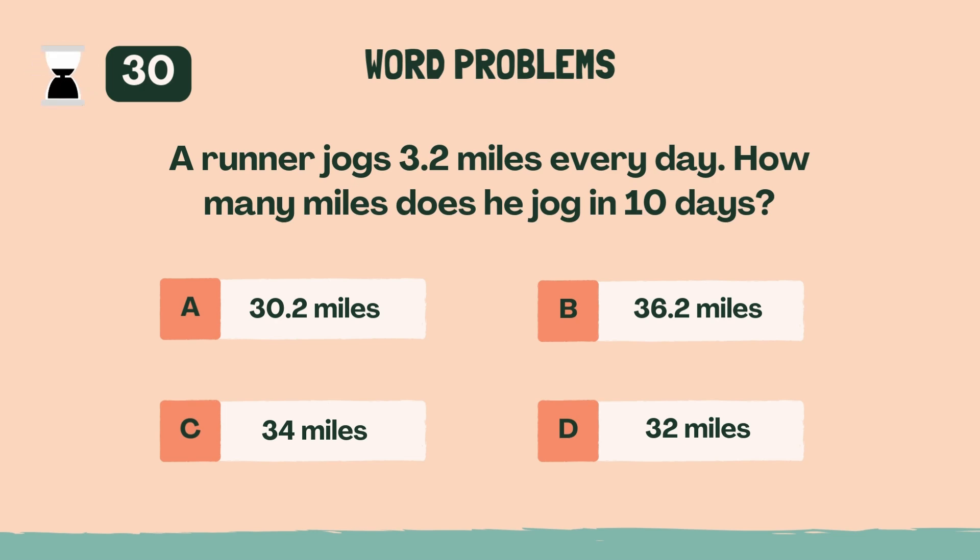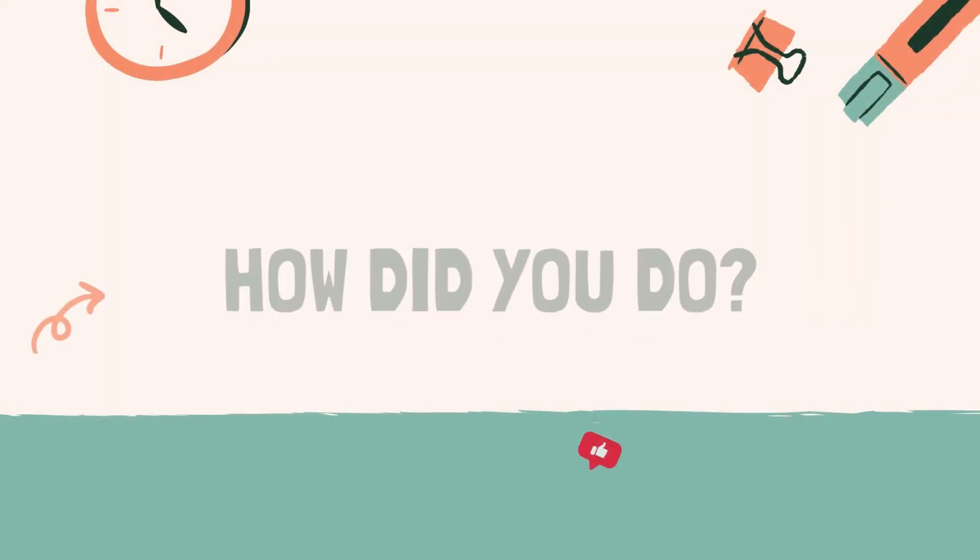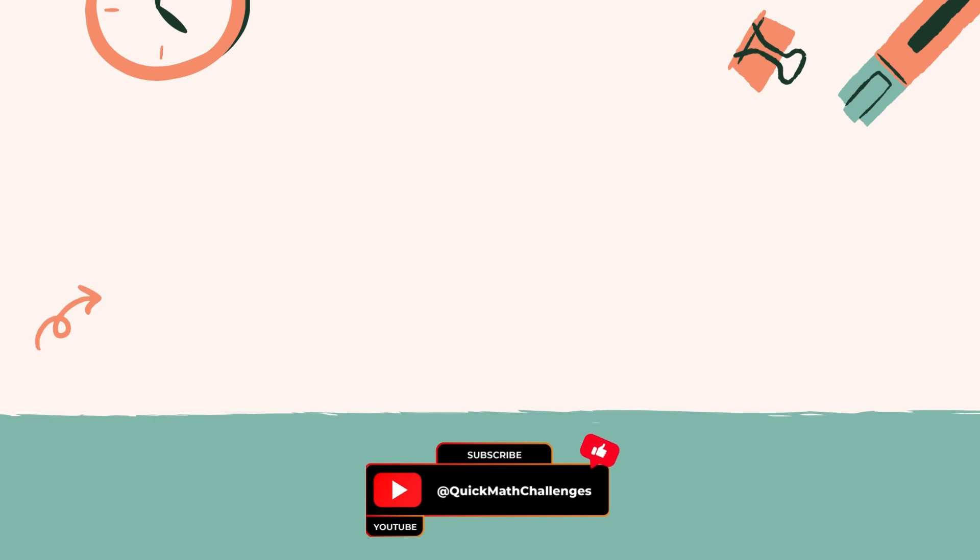A runner jogs 3.2 miles every day. How many miles does he jog in 10 days? D, 32 miles.